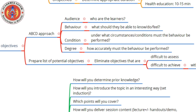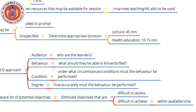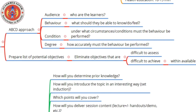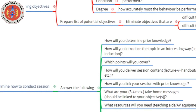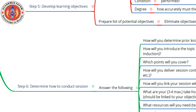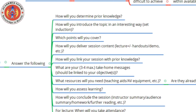You need to prepare a list of potential objectives and then eliminate those which are difficult to assess or difficult to achieve within the available time. Keep linking things with what you have already determined — you know the most ideal timeframe and must try to fit everything within it. The actual conduct of the session is step six, and to do this you need to answer several questions.